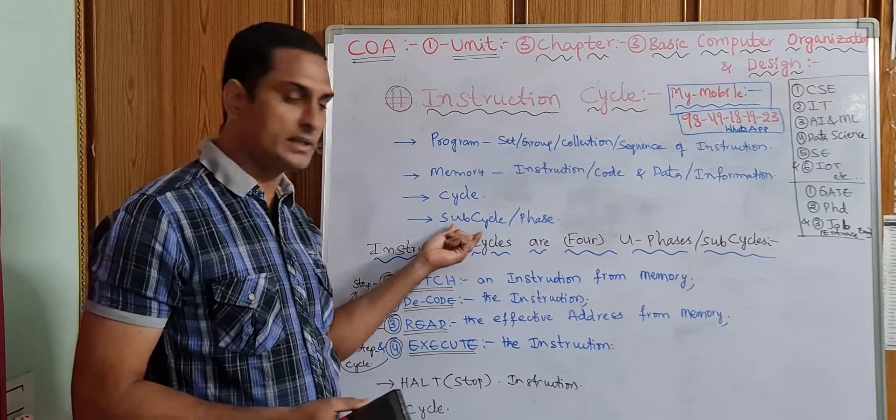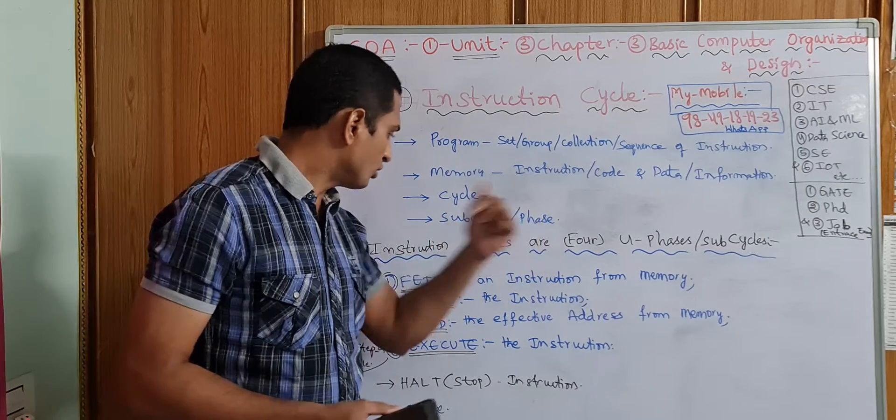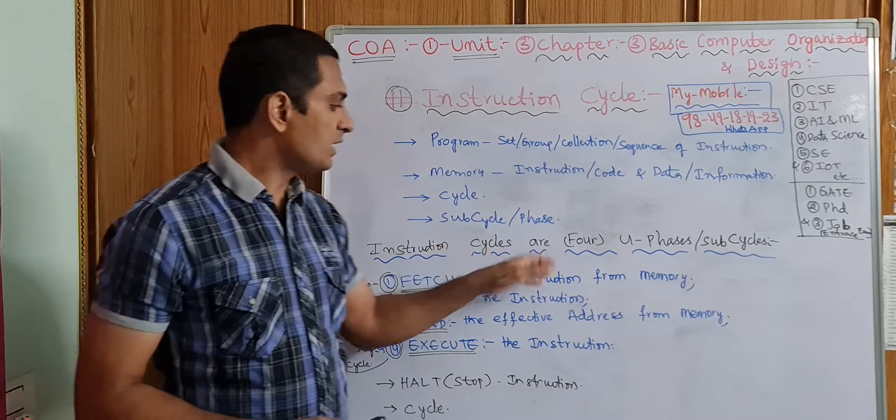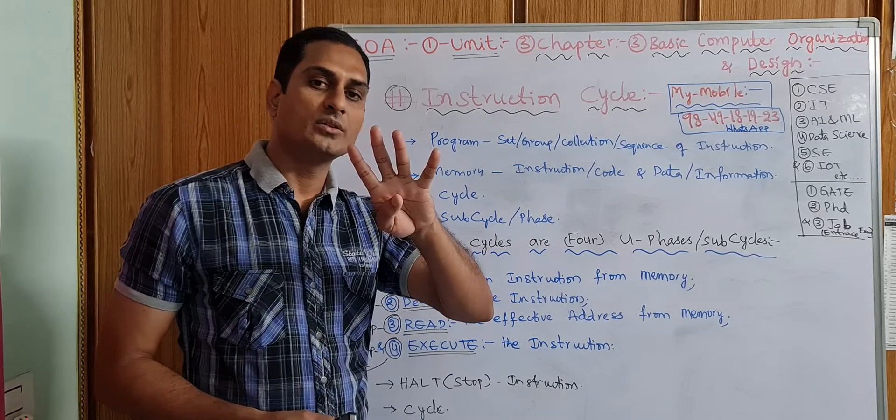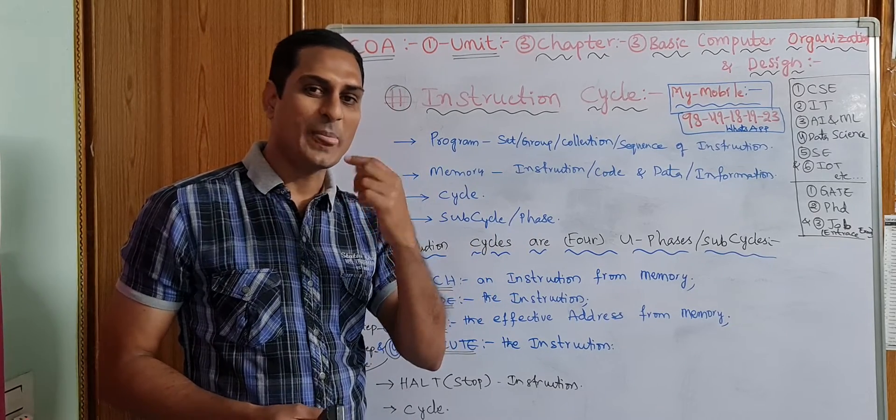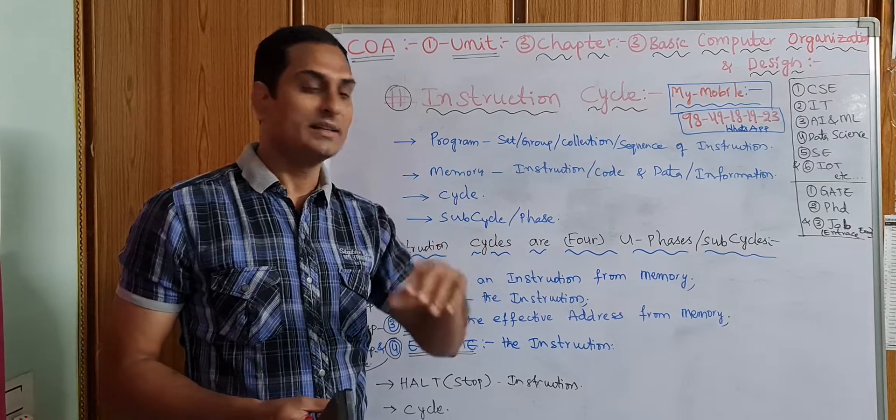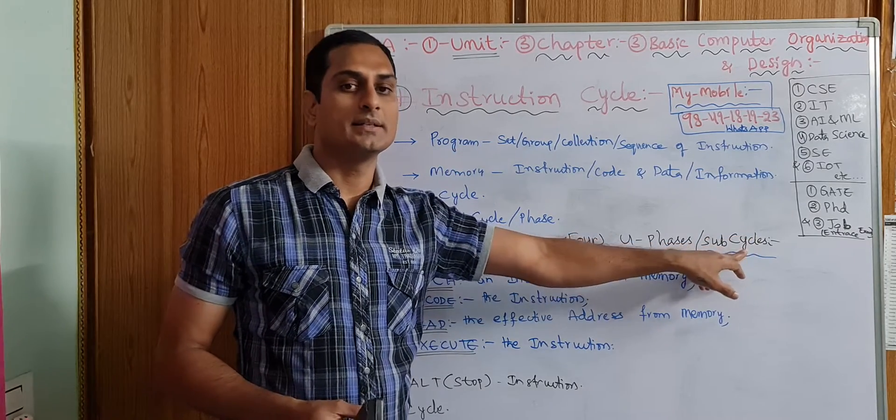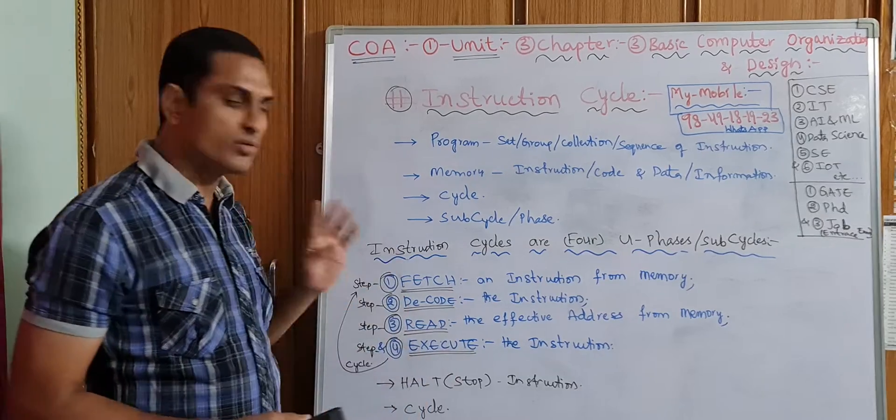In the cycle we have sub-cycles and phases. Instruction cycle has four phases—not A phase, but phase, PHAC—means layers, sub-cycles. Those are four.